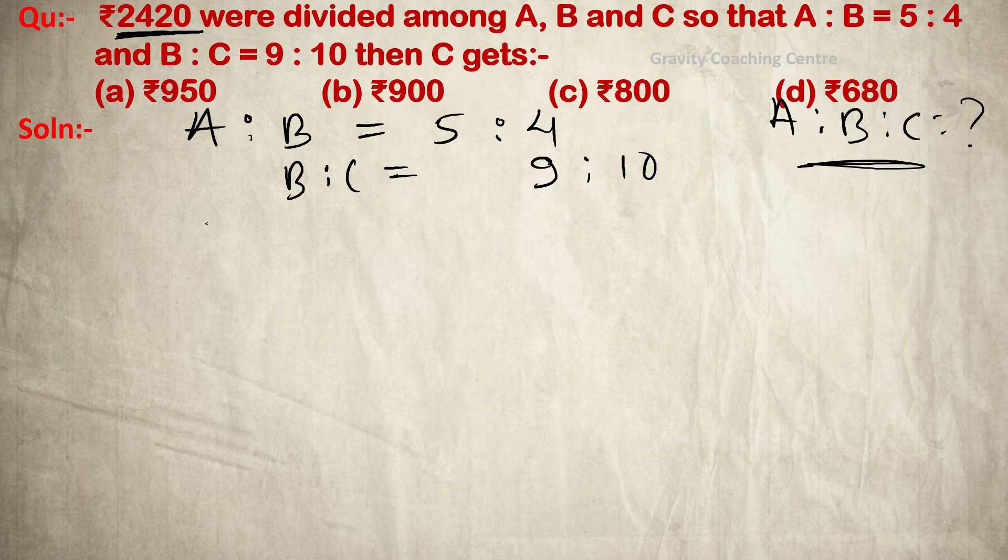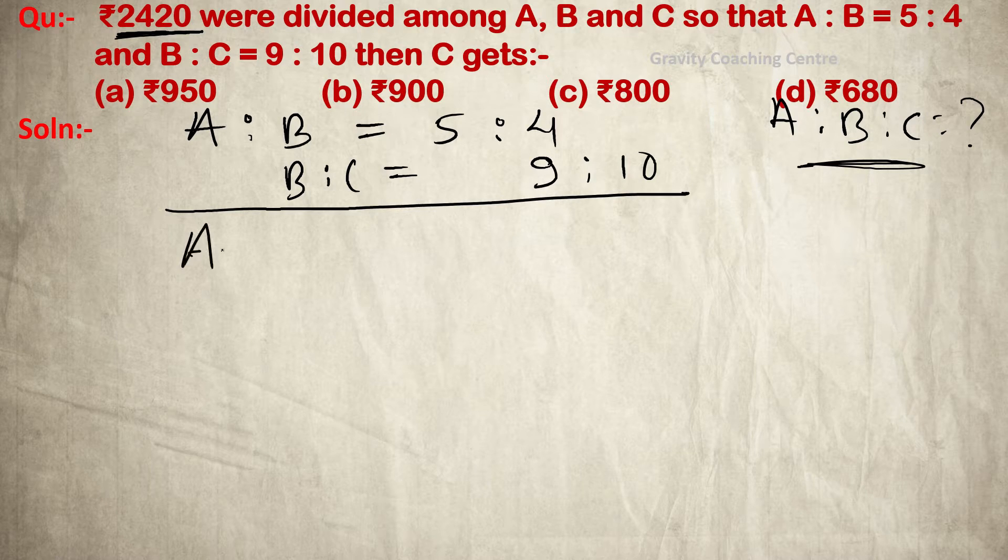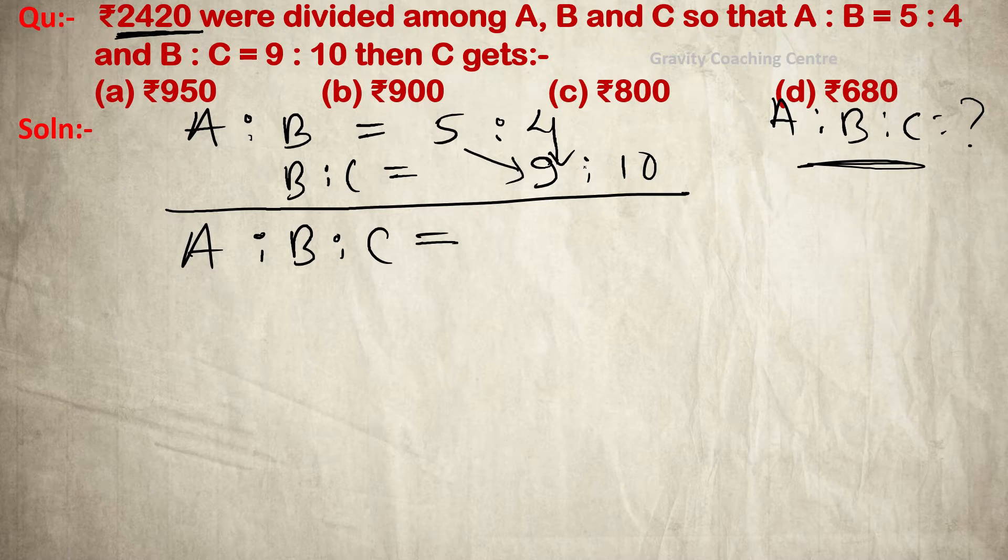So simply, A:B:C equals... this 5 times 9, 4 times 9, and 4 times 10.